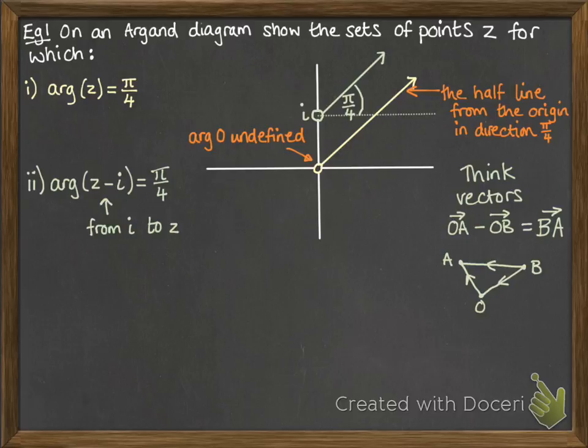So it gives us this angle here being π/4. So starting at i, going in a direction of the vector z or the complex number z would be anywhere along that line, so that we get that angle of π/4.